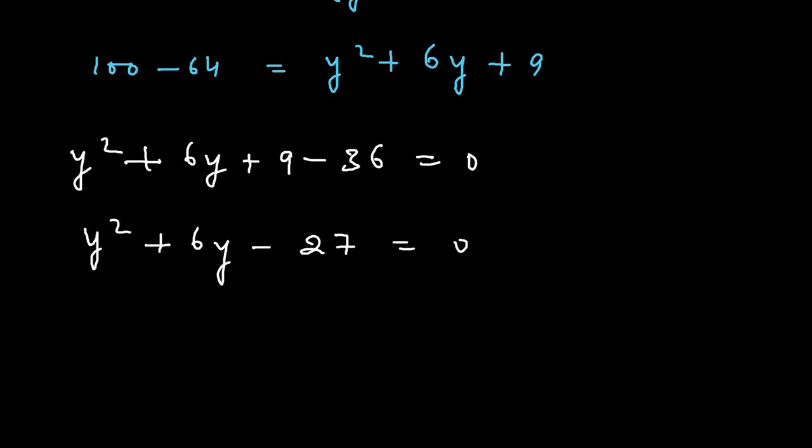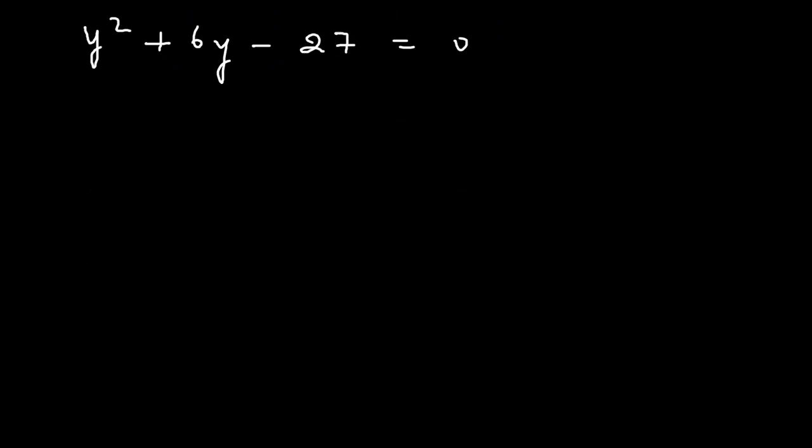This is a quadratic equation and we shall factorize this quadratic equation by using the factorization method. We shall split the middle term in such a way that the product of the factors equals the product of Y square and minus 27, and the sum equals plus 6Y. Then it equals plus 9Y minus 3Y.